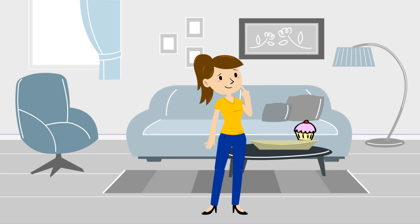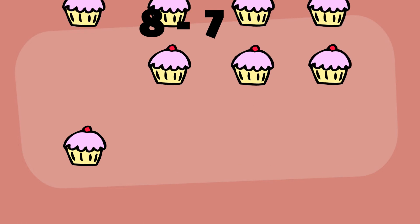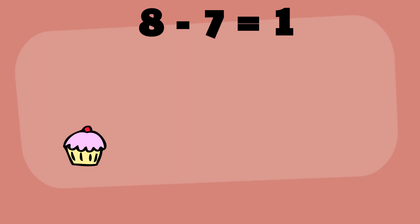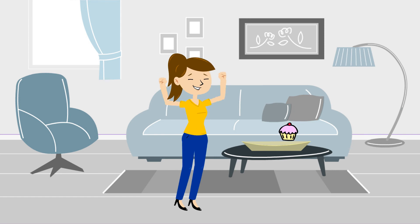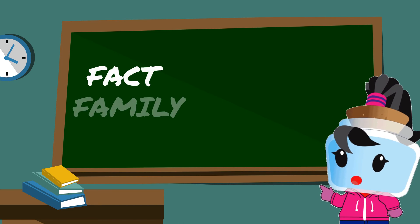If Jen was not hungry and she let all her friends eat their cupcakes first, how many cupcakes are left? We know that she baked eight cupcakes and her friends ate seven of them, so eight minus seven equals one. One cupcake is left for Jen to eat.